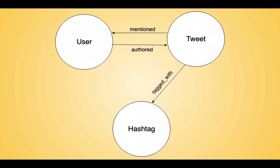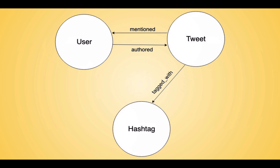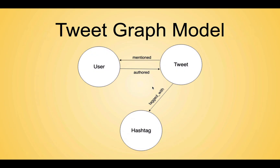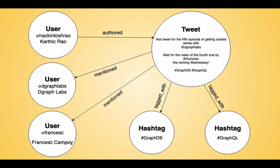Now that we've described our nodes and edges, let's talk about potential relationships. The authored edge: a user has a tweet or many tweets; a tweet has one author, which is the user. The mentioned edge between the tweet and the user: a tweet may mention a user; a user does not mention a tweet. The tagged edge: a tweet is tagged with a hashtag; a hashtag is not tagged with a tweet. Look at all the nodes with their strong relationships — notice there's no direct relationship between an author and a hashtag node.